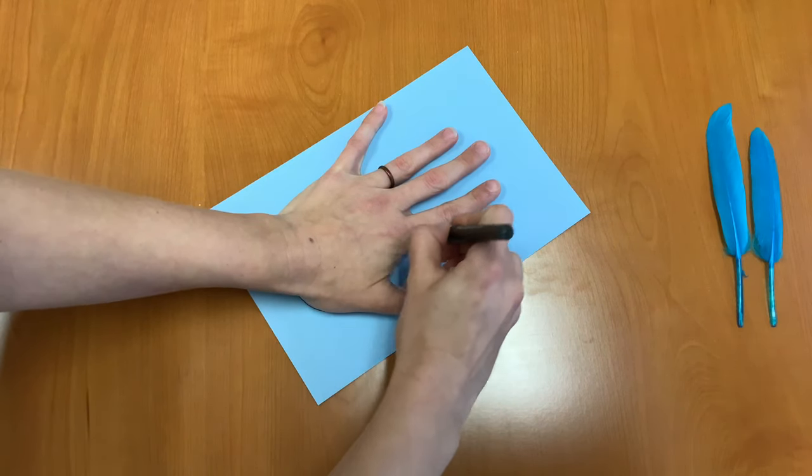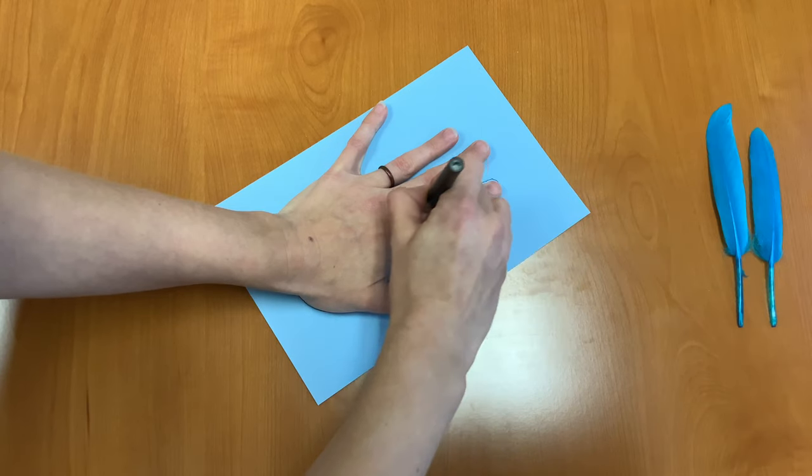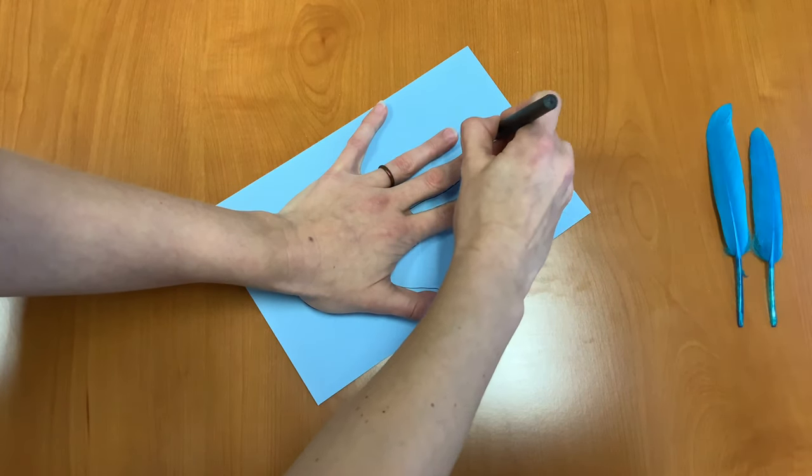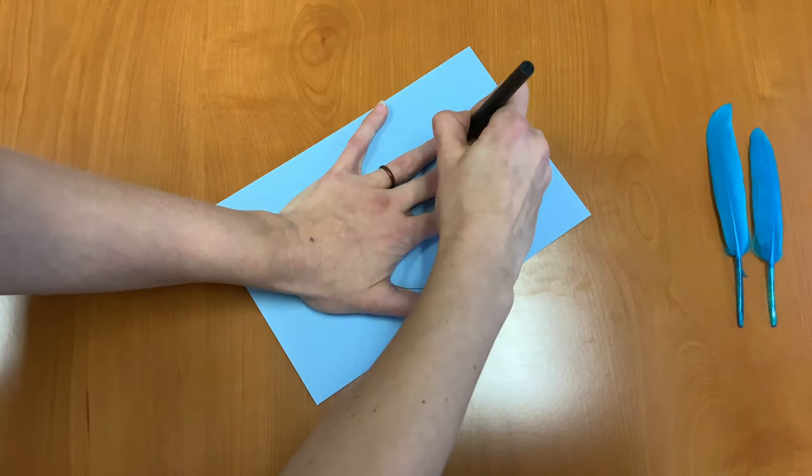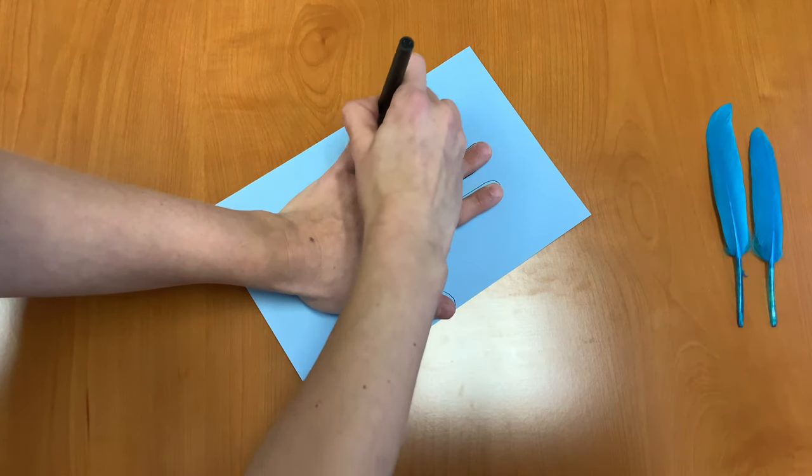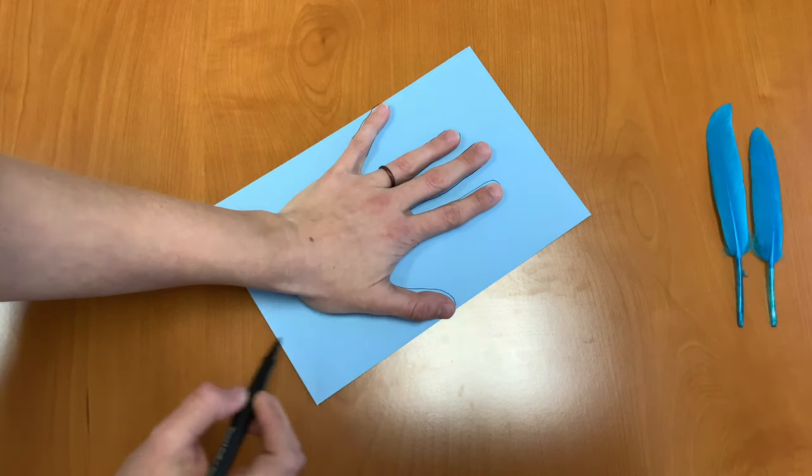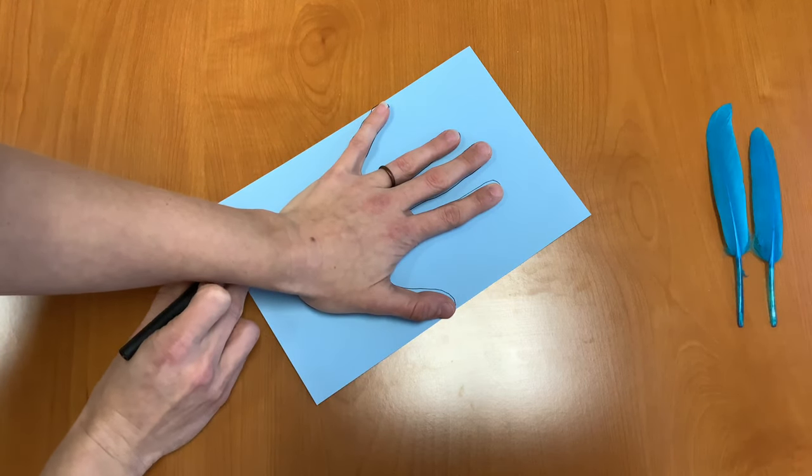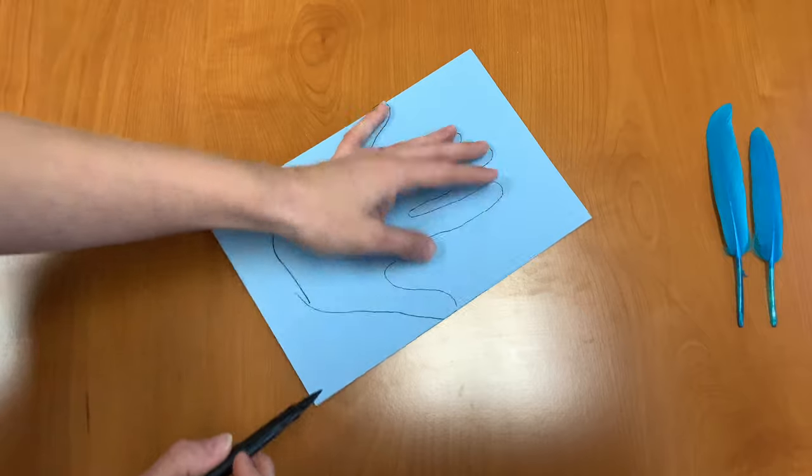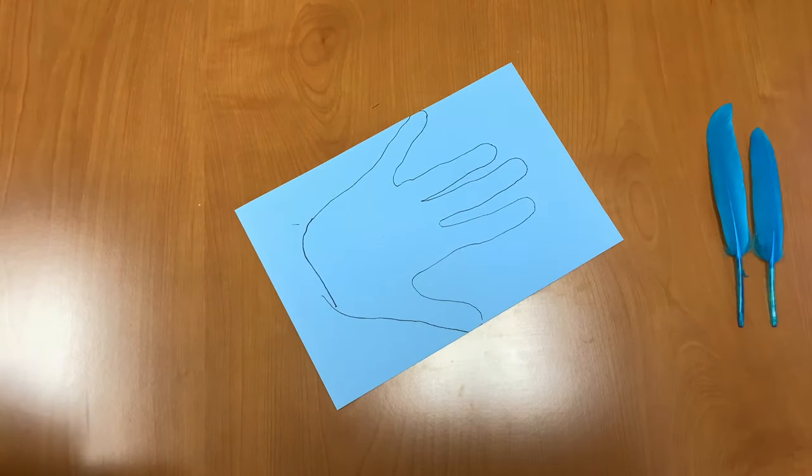That's okay if we go a little bit off the paper. No one else's handprint owl is going to be like mine because no one else is using my hand, just like no one's will be like yours. There we go. So now we have a handprint.